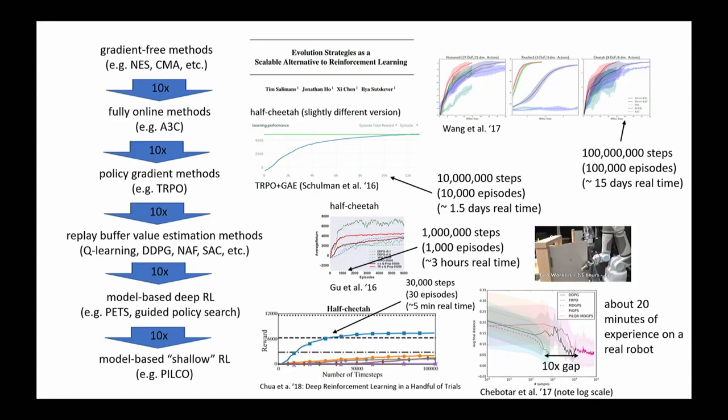There are really big differences in sample efficiency depending on the method. But you might ask: why not just use the most efficient methods at the bottom? Scalability is one concern — the complexity of problems solvable differs. Computational efficiency is another reason: just because something is sample-efficient doesn't mean it's computationally efficient. Running state-of-the-art model-based RL might require more compute time than a policy gradient method if that method can use a very fast simulator, since model-based methods train models for many gradient steps per simulation step.